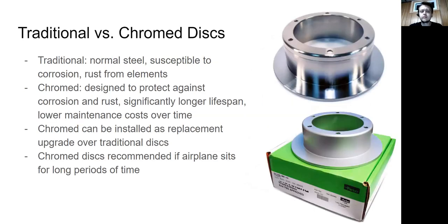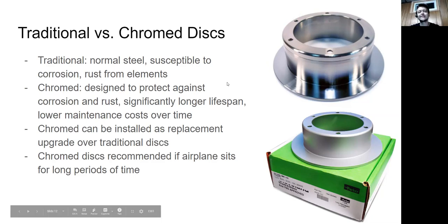Discs can be made out of traditional steel or chrome steel. Traditional discs are just normal steel brake discs. By nature, they're susceptible to corrosion and rust from the elements — for example, if your airplane is sitting outside in the rain, the discs can rust.